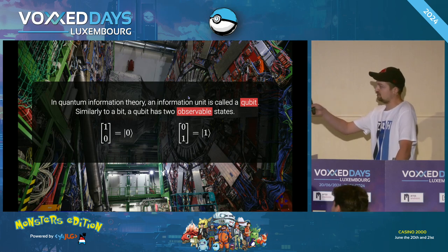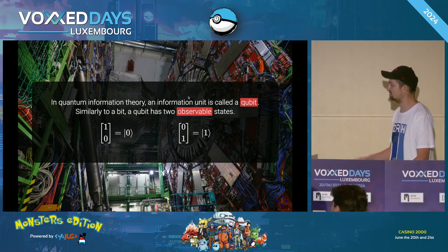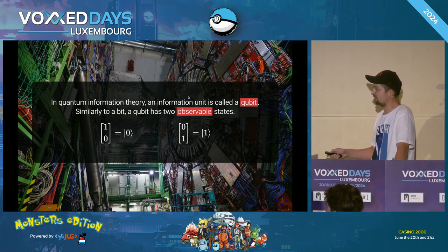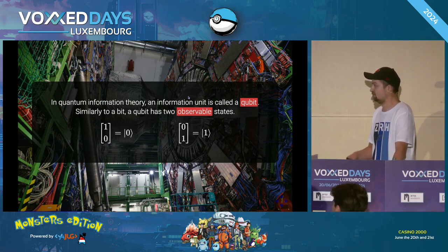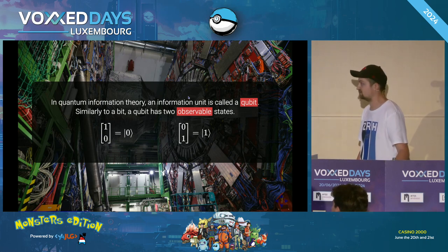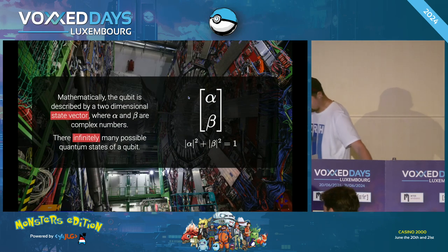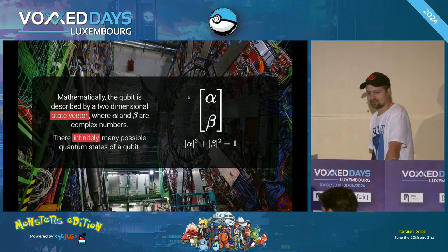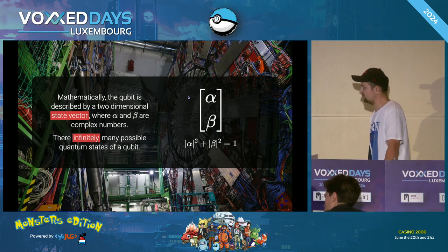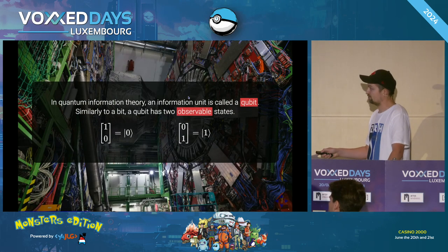A qubit can only ever be observed to be in one of two possible states. The most commonly used pair is ket zero and ket one — the ket symbol is notation from quantum mechanics and is a shorthand for writing a vector. Mathematically, the qubit is described by a state vector consisting of two complex numbers, alpha and beta, with only one condition: the normalization condition, where the absolute value of alpha squared plus the absolute value of beta squared must equal one. You can see that ket zero and ket one fulfill this condition — alpha is one and beta is zero, or vice versa. Because this is the only condition, we can find infinitely many alphas and betas satisfying it, which implies there are infinitely many states the qubit can be in.